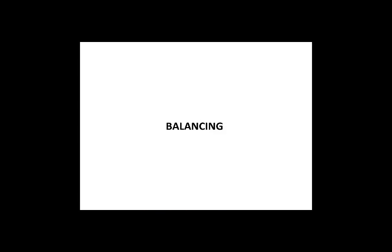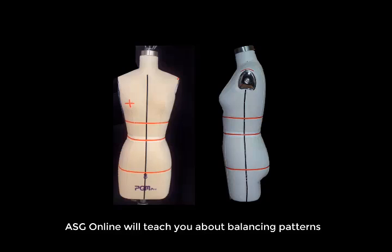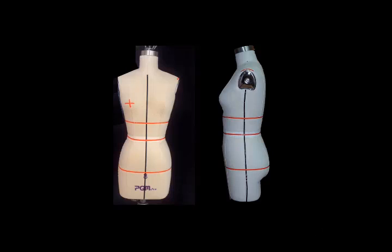There are a few areas that need to be balanced. Balancing is done to be sure that the center front and center back are perpendicular to the floor. For a bodice, the front needs to be balanced to the back, side seams need to be balanced as do the armholes. The horizontal lines used in fitting need to be parallel to the floor.